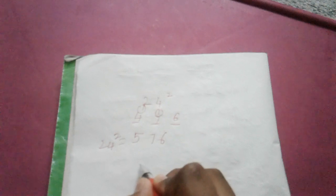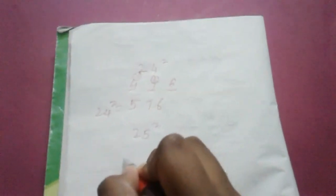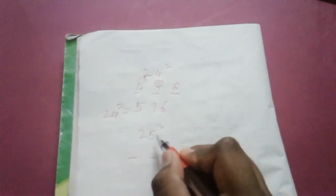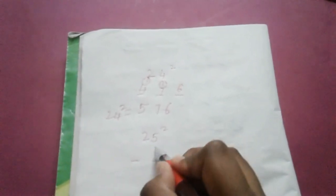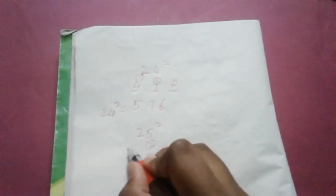Now, we can take another example as 25 square. Keep 3 dashes. First, square this number. 5 square equals to 25. 2 square equals to 4.